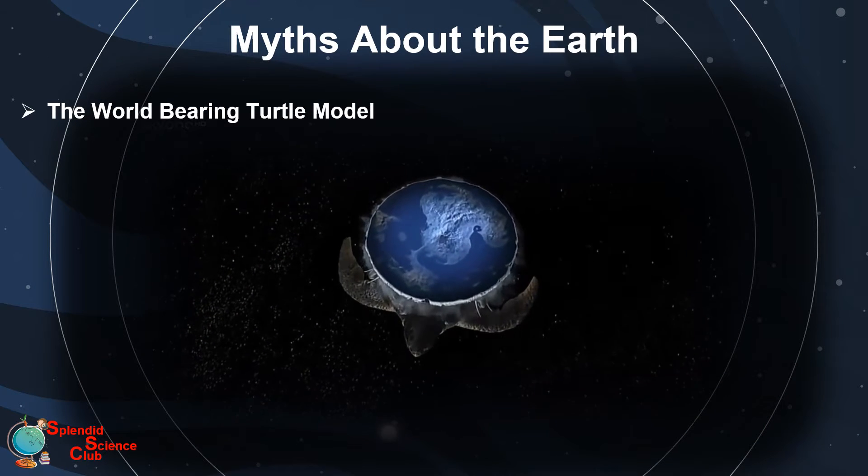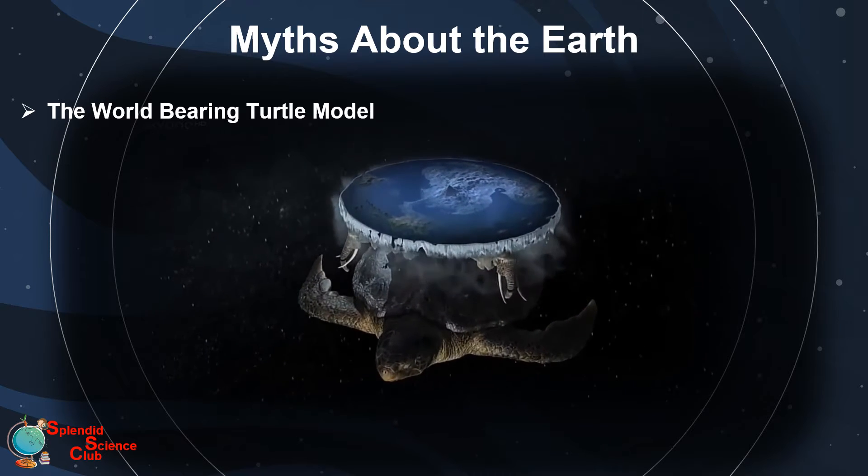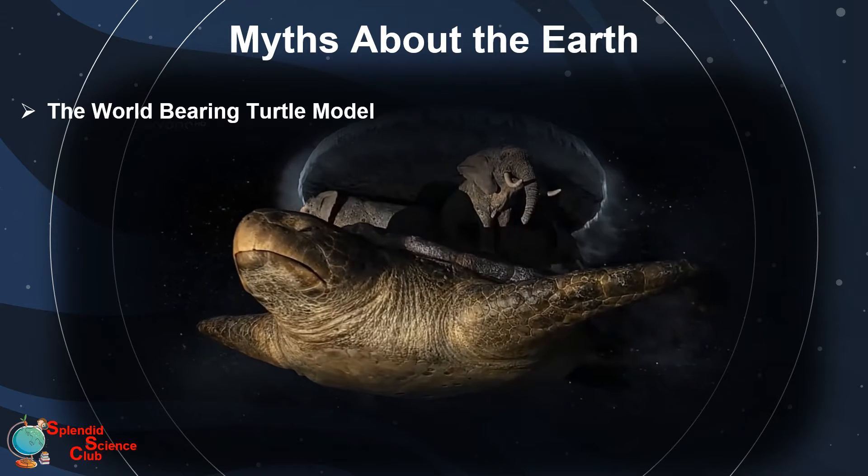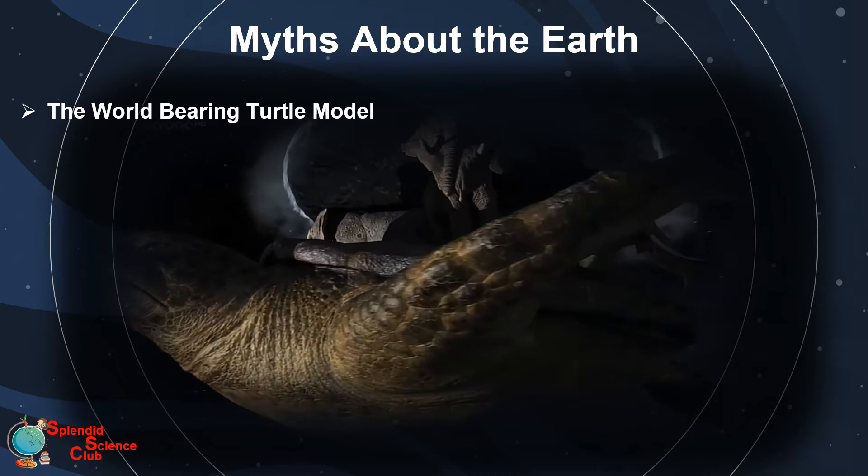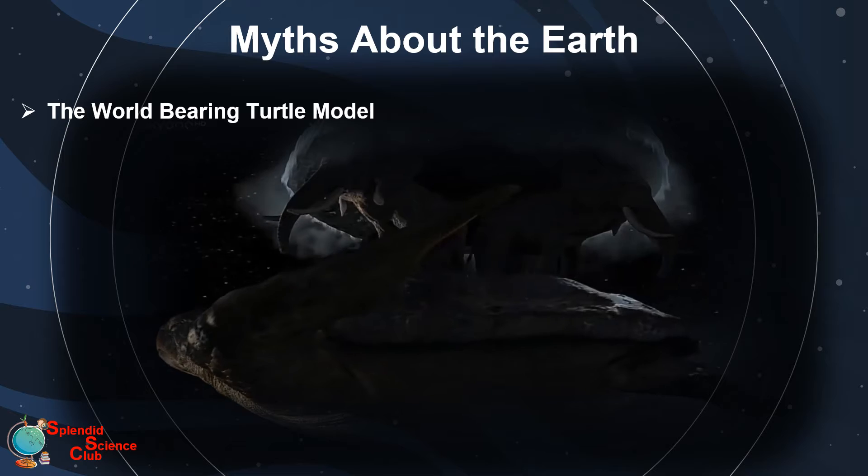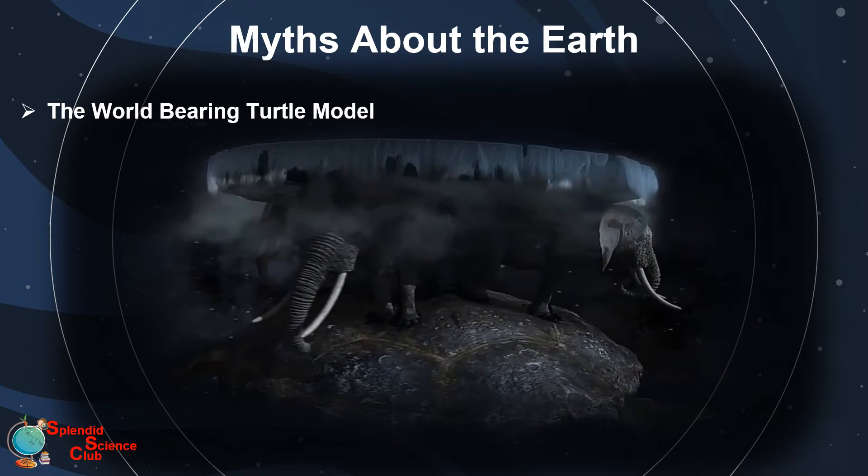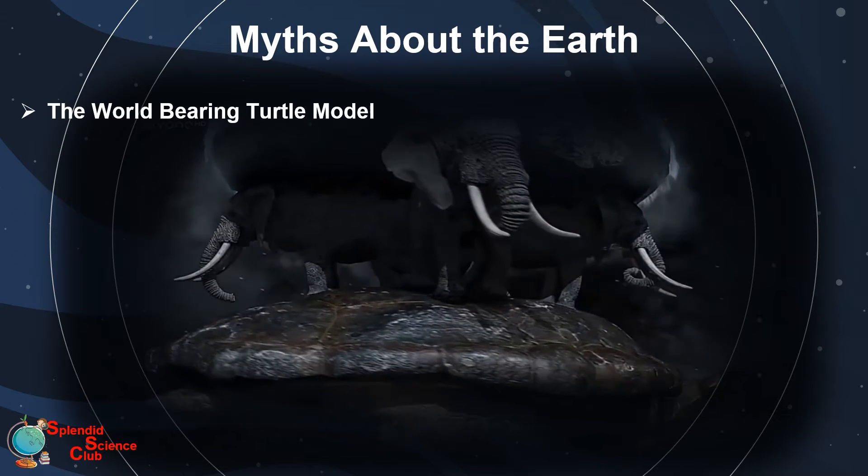People in ancient times, like in 1800s, thought that the Earth was flat and it was supported on the backs of four elephants, themselves resting on the back of a turtle. This myth occurred in Hindu, Chinese, and indigenous American mythology.